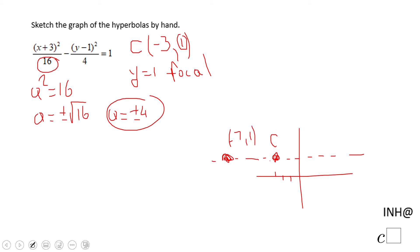And if I go from negative 3 and 1, four units right, that means that point will be 1 and 1.